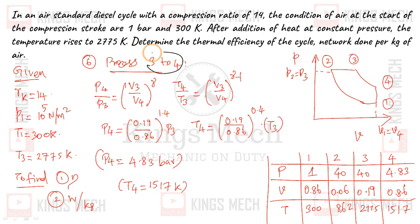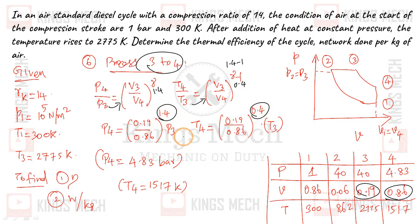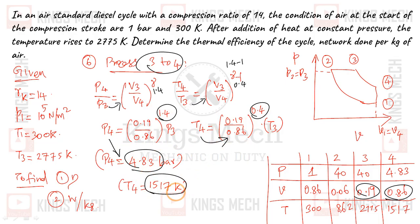For process 3 to 4: P4 divided by P3 equals V3 divided by V4 to the power of gamma. So P4 equals P3 multiplied by V3 divided by V4 to the power of 1.4. The values V3 is 0.19 and V4 is 0.86. This gives P4 approximately 4.83 bar and T4 approximately 1517 Kelvin.